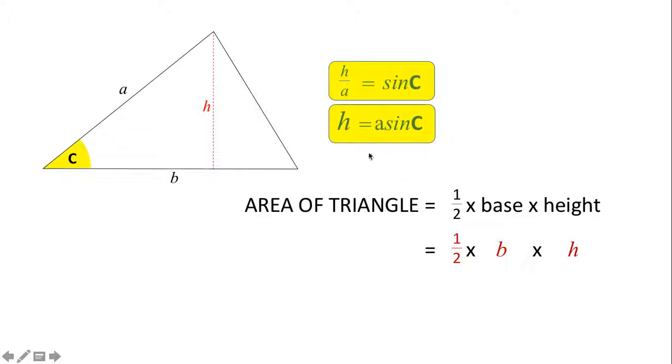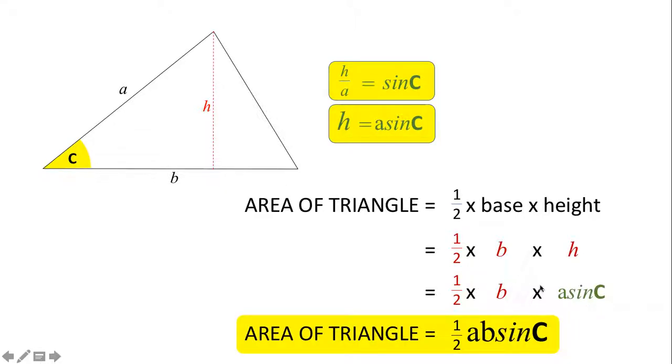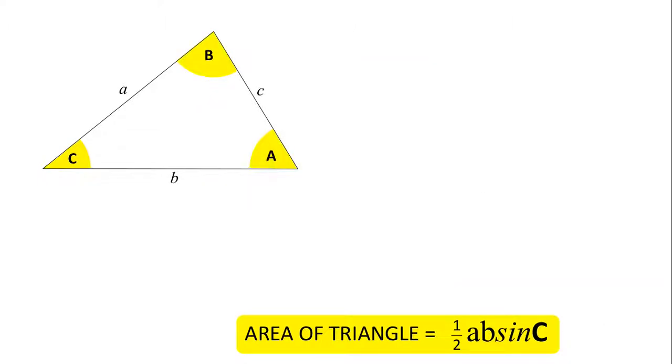So that's a half times b times a times sine C, which you can write in a slightly different order to get a half times a times b times sine C. So the area of a triangle is a half ab sine C, and that's the general rule for the area of a triangle.